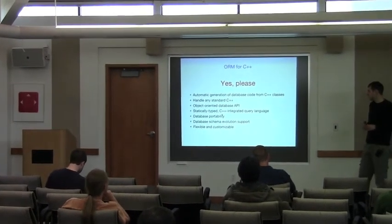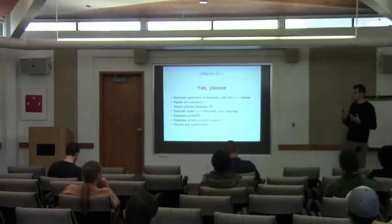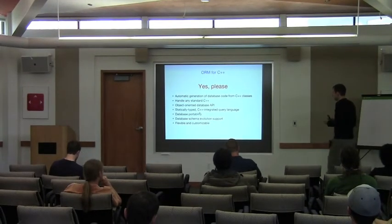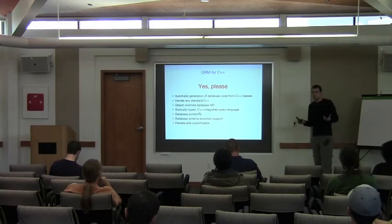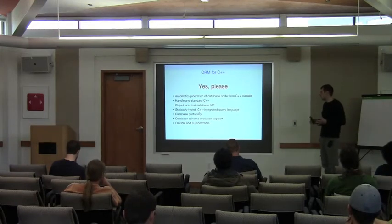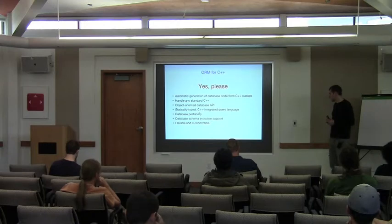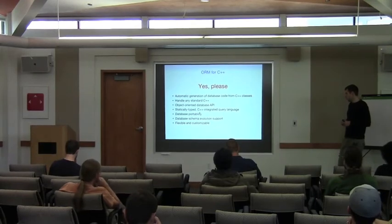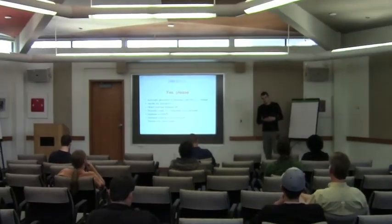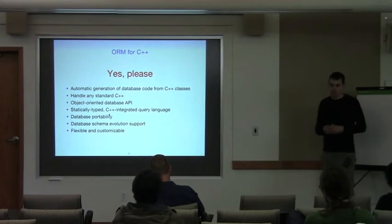ODB will automatically generate database conversion code from your class declarations, and it's capable of doing that for any standard C++. ODB also provides an object-oriented multi-threaded database access API with encapsulated connection management. Then there's the statically typed C++ integrated query language, which we'll examine in detail later. Because the database conversion code is automatically generated, it's easy to switch from one database vendor to another — so we get database portability.